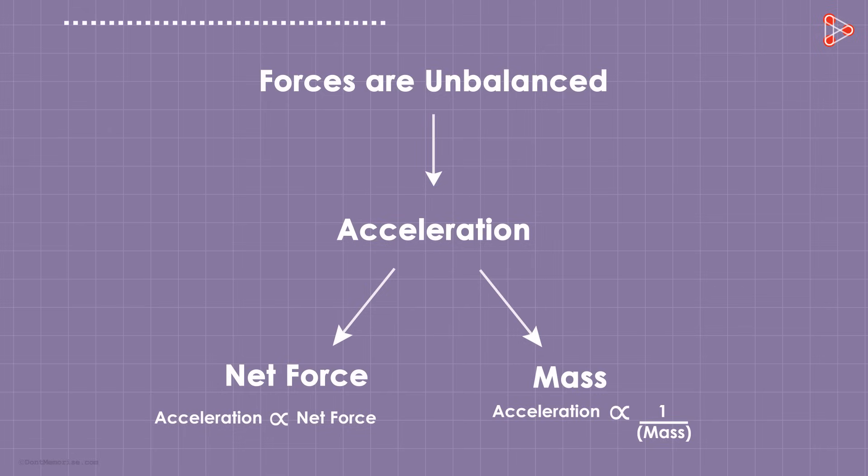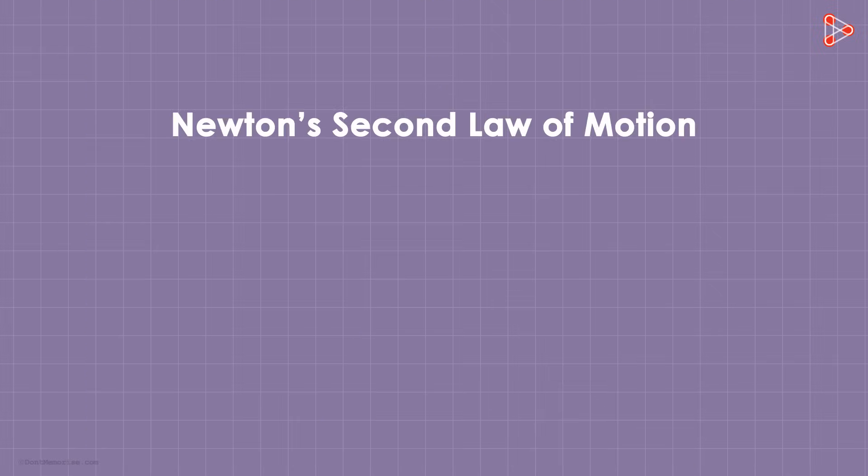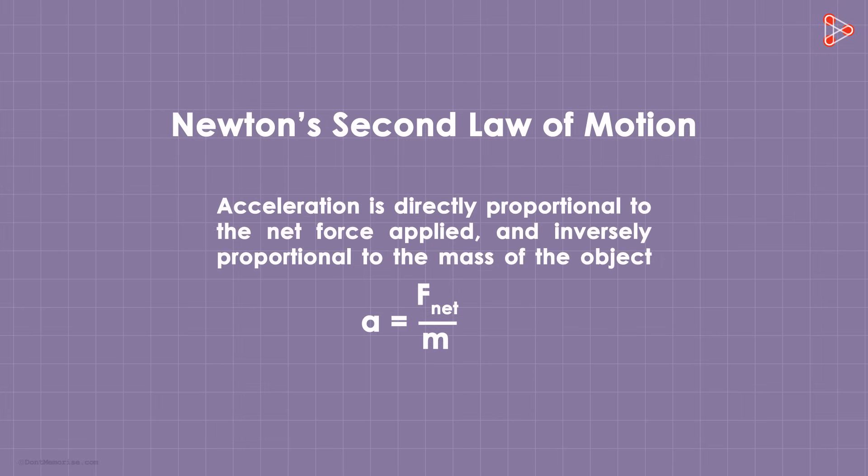If you understand this concept well, then understanding the second law of motion will be very easy. Mathematically it can be written like this. In simple terms, the acceleration is directly proportional to the net force applied and inversely proportional to the mass of the object. That's the second law. Or as more people understand it, like this: the net force is the product of mass and acceleration.